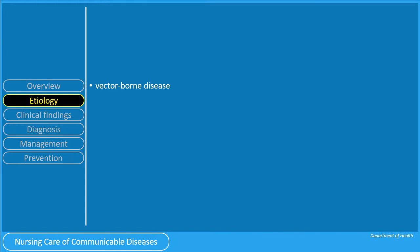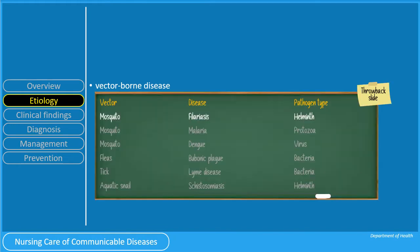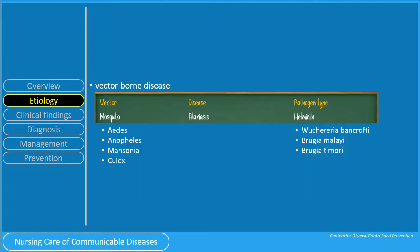Filariasis is a vector-borne disease. Referring back to the table shown during the introductory portion, filariasis is caused by a helminth and the vectors are mosquitoes — including Aedes, Anopheles, Mansonia, and Culex.